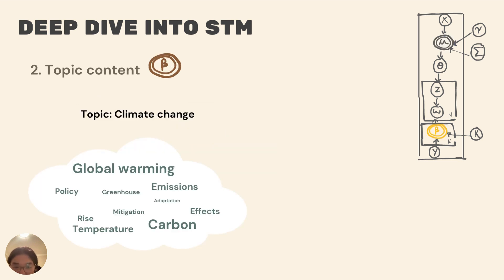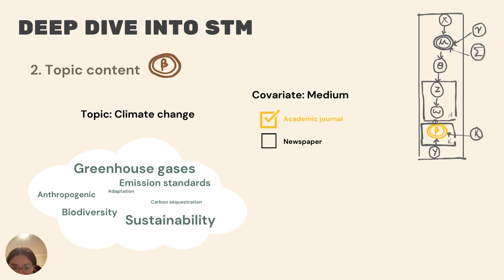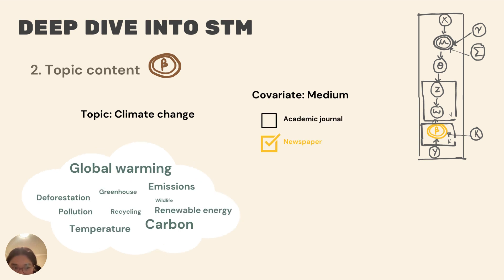And topic content refers to the distribution of words within a given topic. The usage of words within a topic can differ based on the context. For example, climate change can be discussed differently in academic journals and newspapers. Academic writing might include technical phrases like carbon sequestration, while newspapers would use more everyday language like global warming.